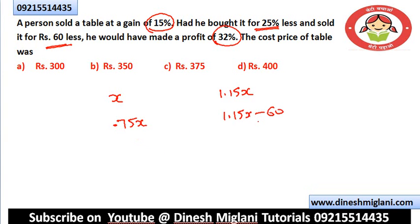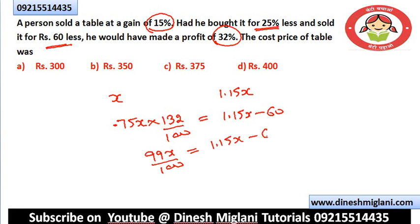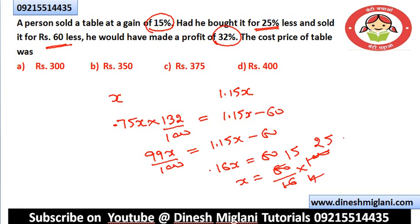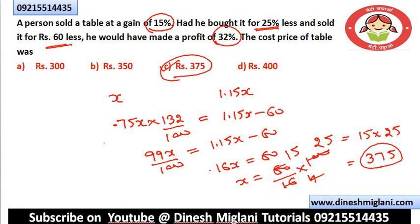The new selling price equals new cost price × 132/100 (32% profit). So: 1.15X − 60 = 0.75X × 132/100 = 0.75X × 1.32 = 99X/100. Solving: 1.15X − 99X/100 = 60, which gives 0.025X... wait, simplifying: 1.15X − 0.99X = 60 → 0.16X = 60 → X = 60/0.16. After solving, X = 375. The cost price is Rs. 375. Hence C is the answer.